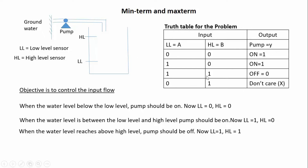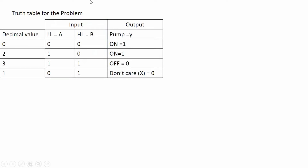The condition where LL does not sense but HL senses is not practically applicable, so I am taking that case as a don't care. You do not need to care about the output in that case because practically this input condition never happens. So I am treating it as a don't care — you may consider the don't care as 0 or 1 for simplicity. This completes the truth table for the problem.